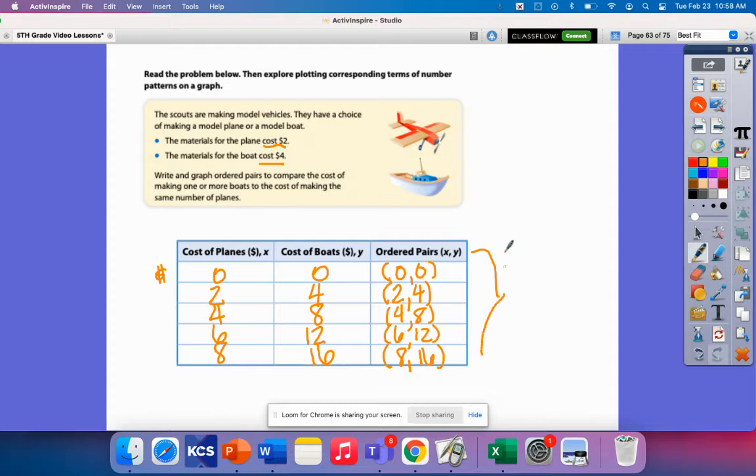Okay, now what do you notice about this pattern here? What is the relationship between the X value and the Y value? So remember, the X value is the plane, and this Y value is the boat. So what relationship or what pattern do you see?